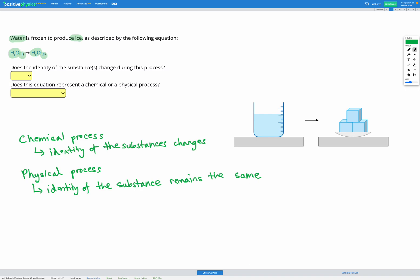However the identity of the substance, what it's actually made up of, is staying the same. You can see we start with H2O and we end with H2O. Those atoms haven't been rearranged at all within the molecules. So the identity has not changed. Therefore this must be a physical process because the identity has not changed.